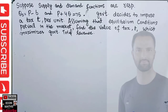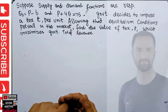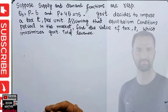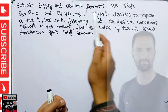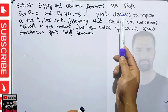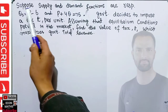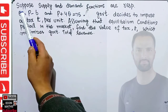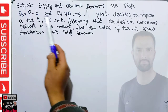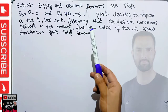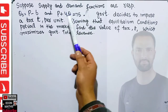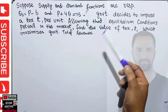In this video we will try to solve a problem that was asked by a brother Modo Babarto on the Telegram channel EconMaths. The question is: suppose supply and demand functions are respectively given as the supply function QS = P - 6 and the demand function P + 4Q + 75, where P is the price and Q is the quantity.